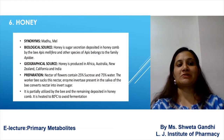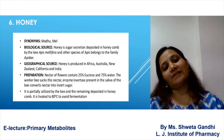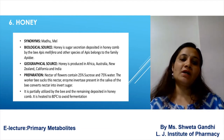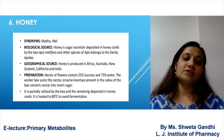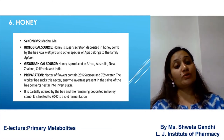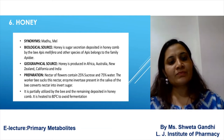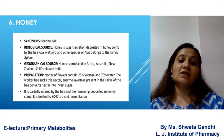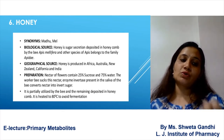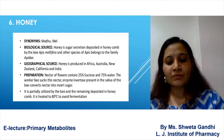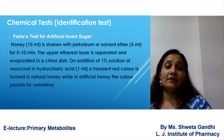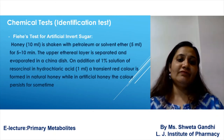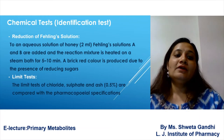The next drug in the carbohydrate-containing category is honey, also called Madhu. It is obtained from Apis mellifera, belonging to the family Apidae. The method of preparation: the nectar of flowers contains 25% sucrose and 75% water. The Fehling's test can be used for the identification of honey.